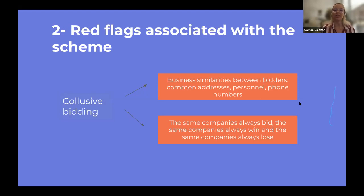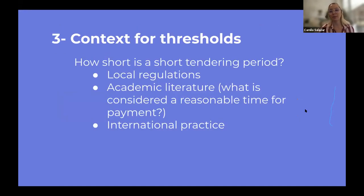The third part, and perhaps the most important, is that even if we have guidance focused on standard data, it's really important that when you apply this in practice, you keep your context into account. This is particularly necessary when we talk about risk indicators — you need to establish certain thresholds. For instance, where to consider that a procurement departs from what's considered normal. For that, you need to look at local regulations to identify what thresholds to establish.